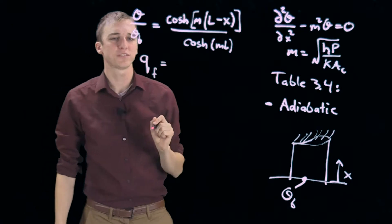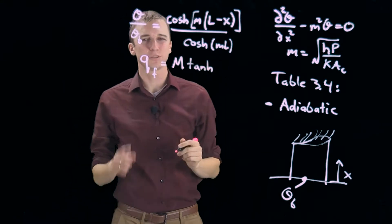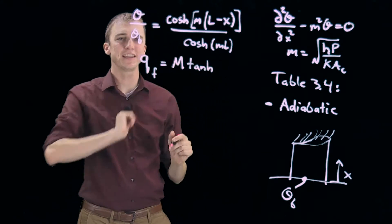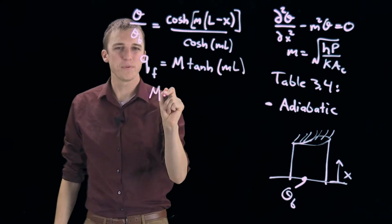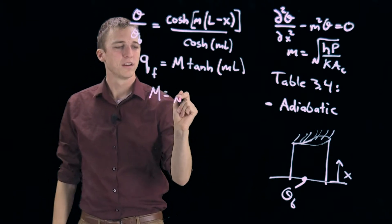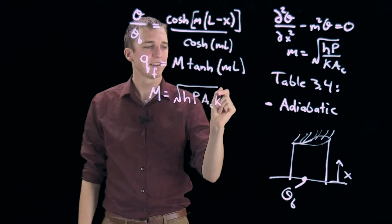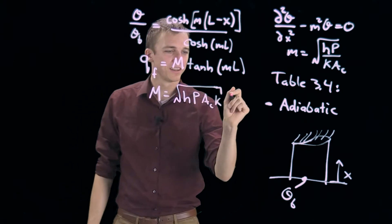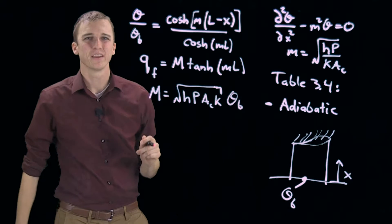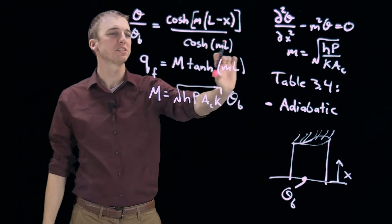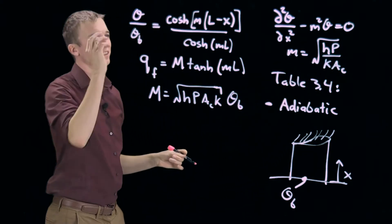Likewise, the heat transfer into the fin is capital M, which we'll define in a second, times the hyperbolic tangent of m times l. Small m is given here. And big M is equal to the square root of hp ac times k, then end the square root times theta b. The biggest mistake everyone always makes is including theta b in this square root. It doesn't go there. So we've defined our two equations we need. We know how to evaluate capital M and small m. We're actually ready to plug everything in.